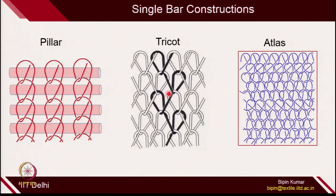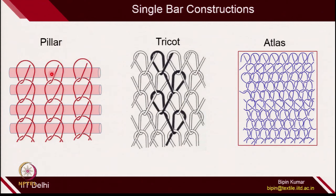You can have 2 guide bars — one can be set as a pillar and another as a tricot construction. Once you combine any of these 2, it becomes a double bar construction. We will see some examples of how you can combine pillar and tricot to create a composite fabric. Similarly, you can combine atlas with pillar, or atlas with tricot — the combinations are infinite, and there are a lot of possibilities in 2 bar constructions.